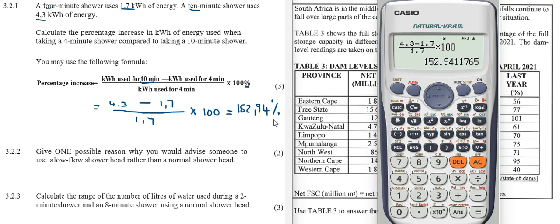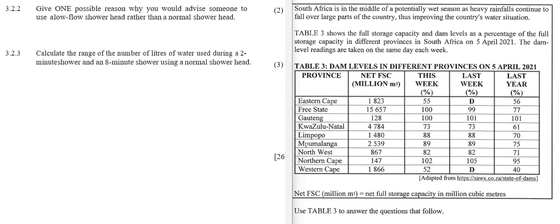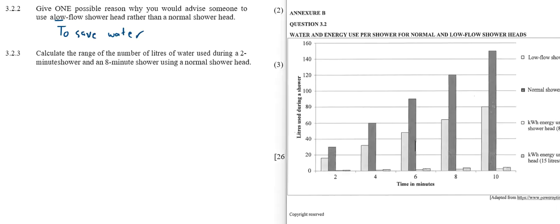3.2.2: give one possible reason why you would advise someone to use a low-flow showerhead rather than a normal showerhead. The most obvious reason would be to save water. 3.2.3: we need to use an annexure for this one. Calculate the range of the number of liters of water used during a 2-minute shower and an 8-minute shower using the normal showerhead.